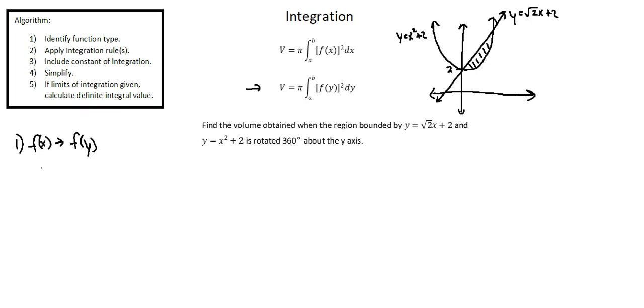So let's begin with y equals root 2x plus 2. We're going to solve or manipulate the function so that x is the subject. I'll subtract 2 from both sides. Y minus 2 equals root 2x. I'll then divide both sides by root 2. And we're left with x equals (y minus 2) over root 2.